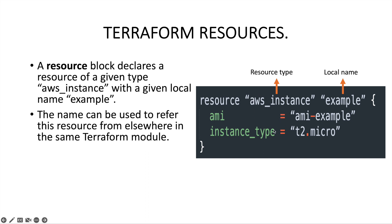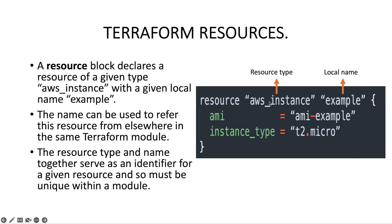The local name allows you to reference this resource from elsewhere in the same Terraform module. For example, if you want to get the public IP of this instance, you can use the resource type and local name to retrieve it. Together, the resource type and local name serve as a unique identifier within the module. If you define another resource block of the same type, you must ensure the local name is unique — otherwise Terraform will throw an error.